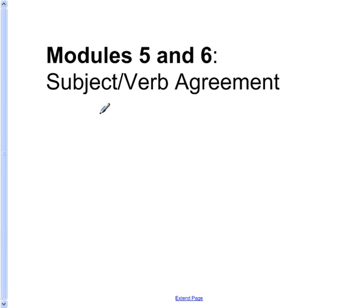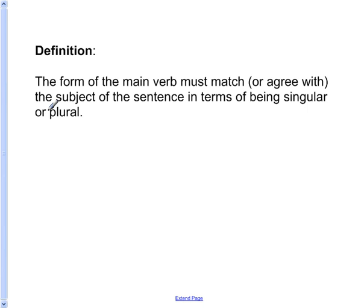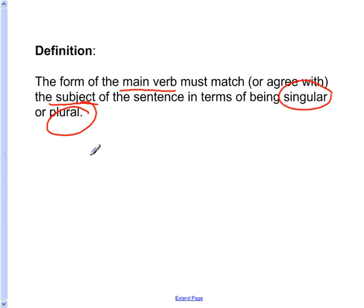Modules 5 and 6: Subject-Verb Agreement. First, let's define what we mean by Subject-Verb Agreement. The form of the main verb must match or agree with the subject of the sentence in terms of being either singular or plural.